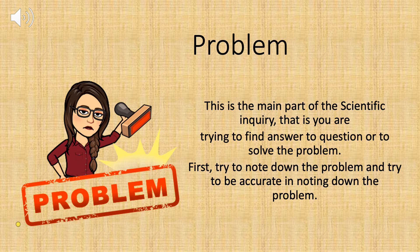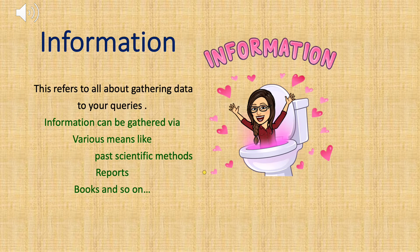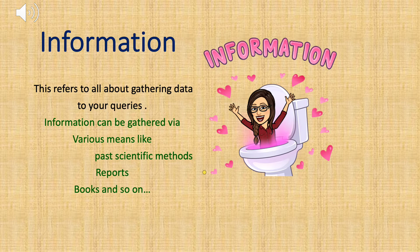Be accurate in noting down what the problem is. The second step is Information. Information is all about gathering data. The data can be gathered by various means like newspapers, magazines, books, scientific methods, past scientific reports — it can be anything.